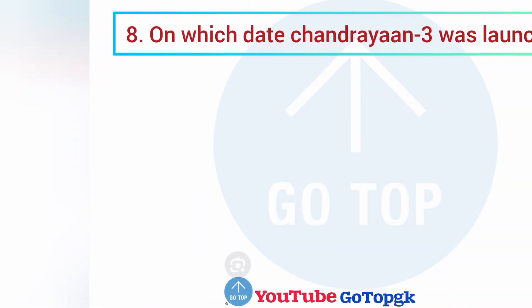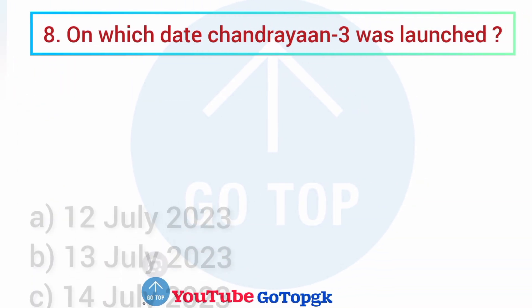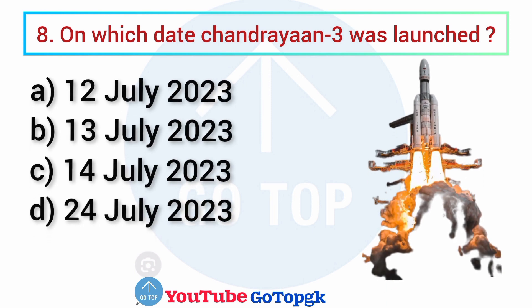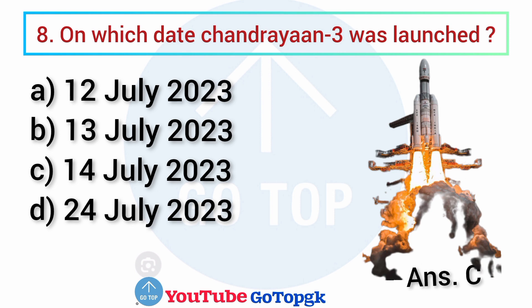Question No. 8. On which date was Chandrayaan-3 launched? Options: A. 12 July 2023, B. 13 July 2023, C. 14 July 2023, D. 24 July 2023. Your correct answer is option C: 14 July 2023.